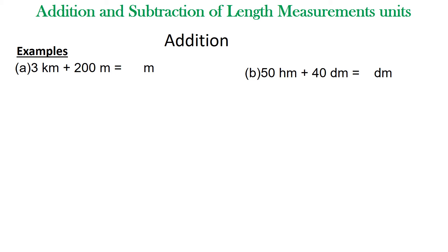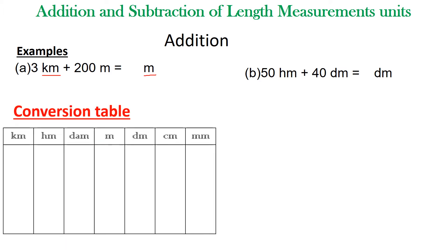Remember that we have learned how to convert units of length measurements. Here we are given different units: the first one is kilometers and the other is meters. To do it correctly, we always start by converting the units to the asked unit. The asked unit here is meters, so use the conversion table and fill in the given digits.